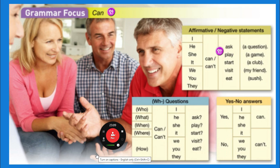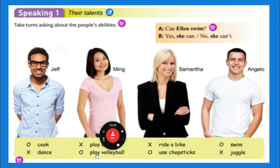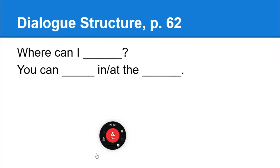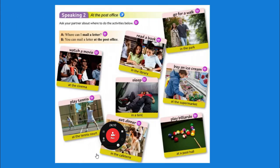On your speaking test or writing test you can give very simple answers like 'yes, I can' or 'no, I can't.' You don't have to give long answers. Remember that you may be asked what you can do on your speaking or writing test — for example, can you swim? Yes, I can. Can you ride a bike? Yes, I can. Be sure you understand all of the vocabulary on this page, because if you're asked a question you have to be able to answer it.